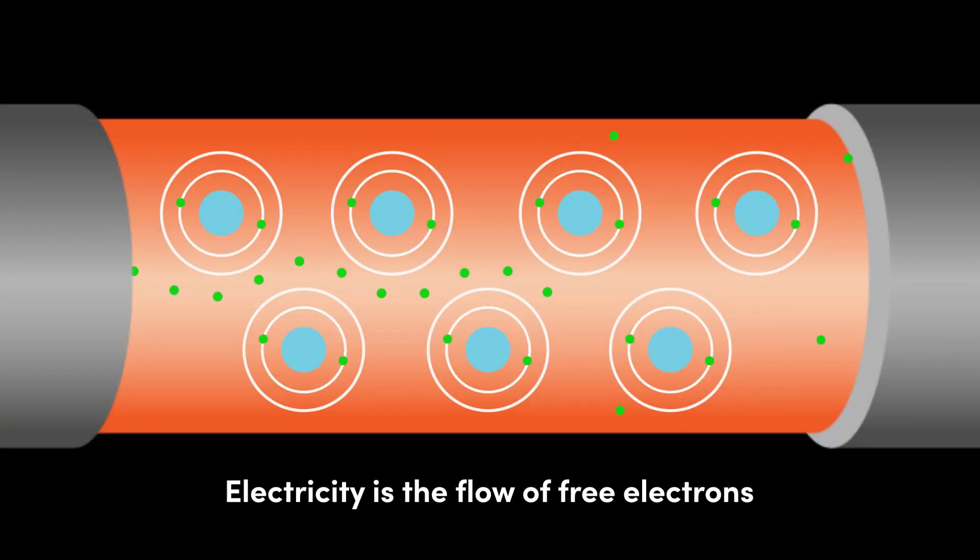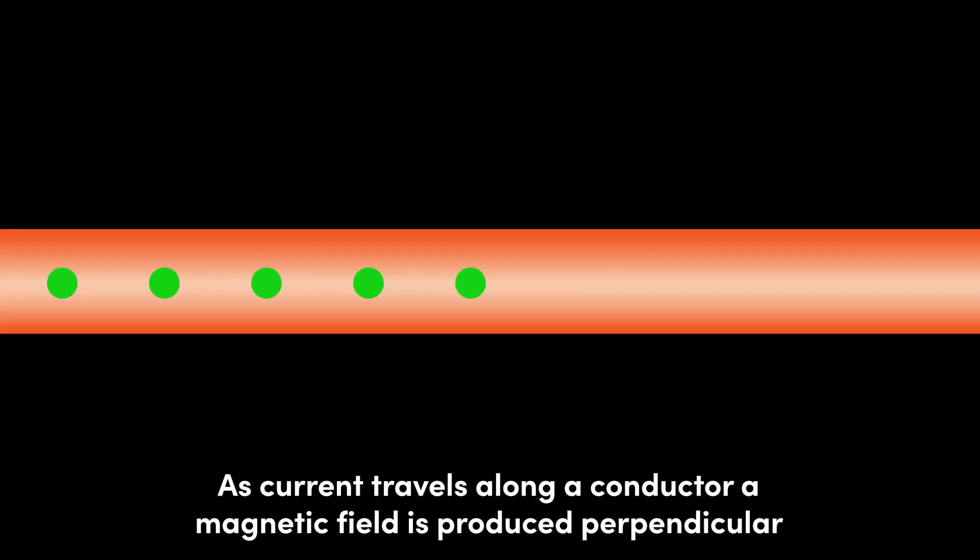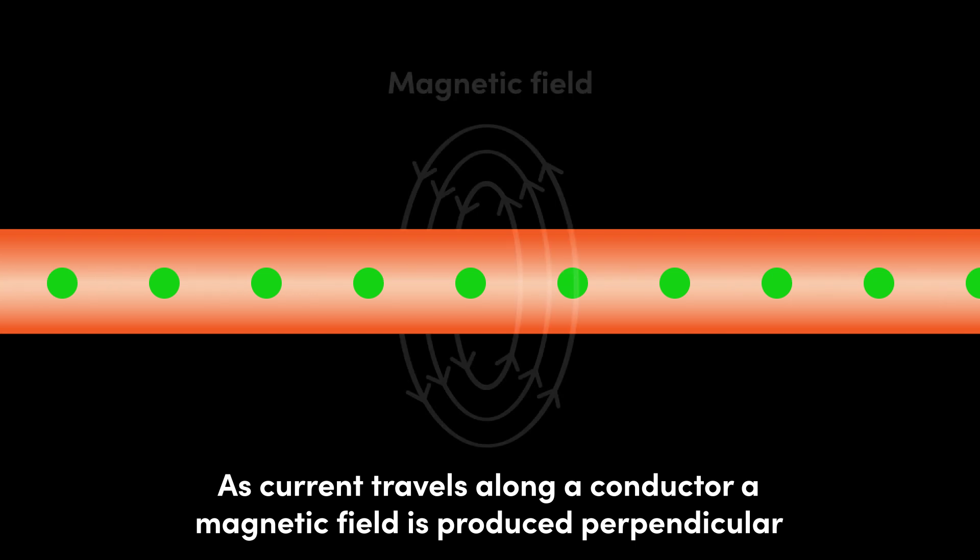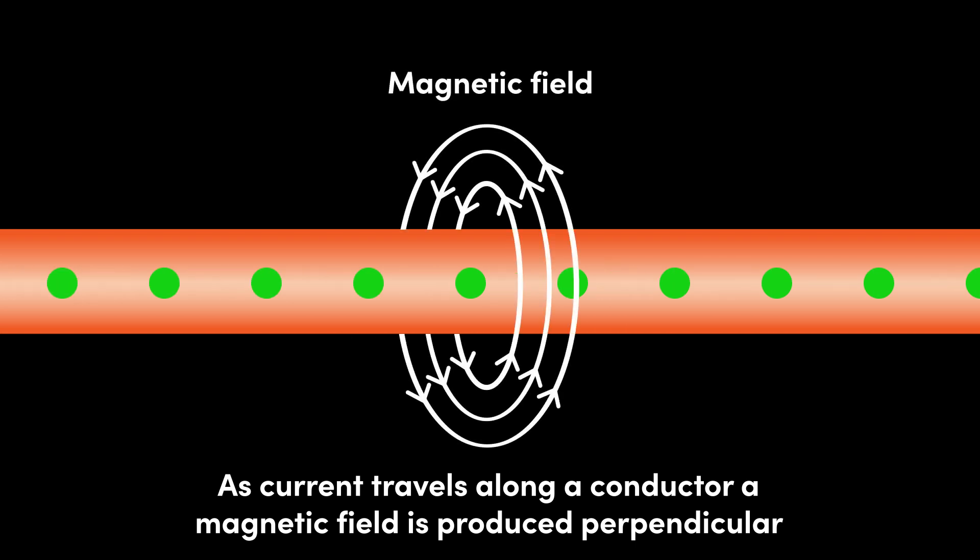Electricity, or electric current, is the flow of free electrons. As current travels along a conductor, such as a copper wire, a magnetic field is produced perpendicular to the wire.